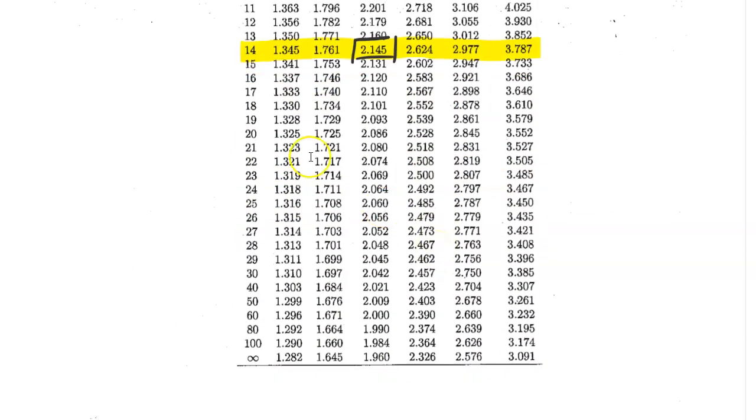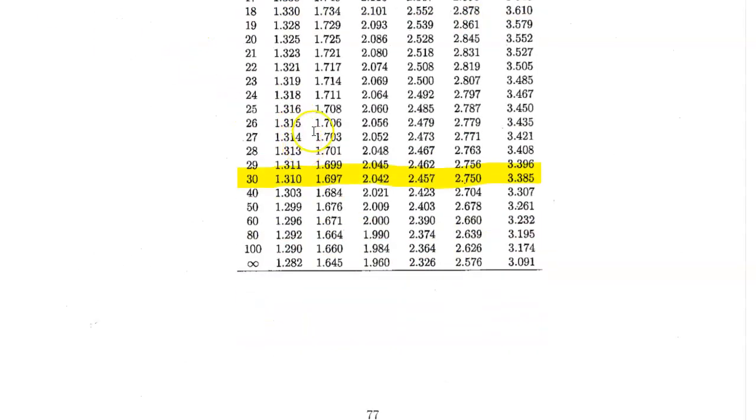Let's find df equals 30. There it is. We want to take the smaller, more conservative estimate. And then at 90% confidence, that's going to be our second column. So that's 1.697.